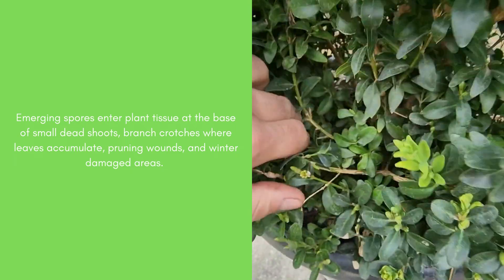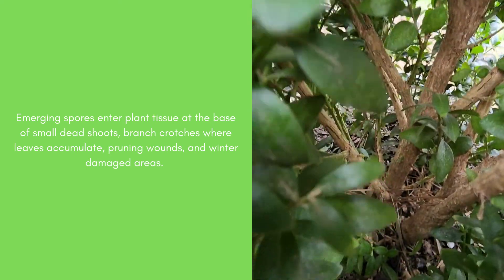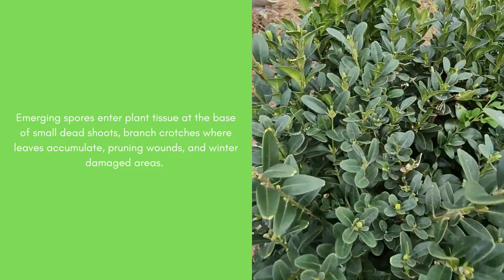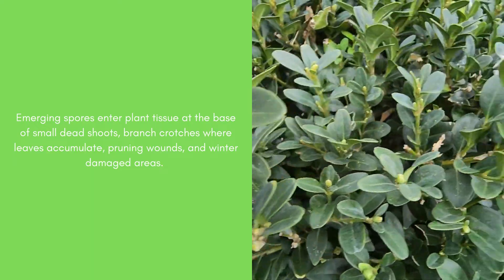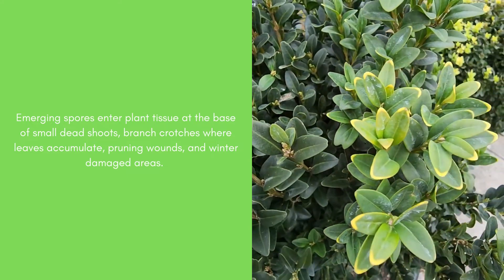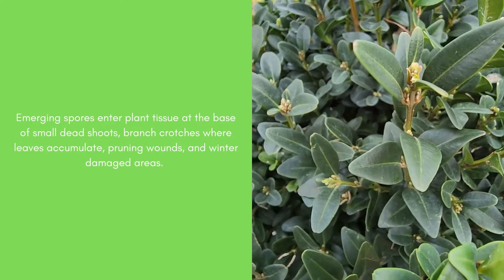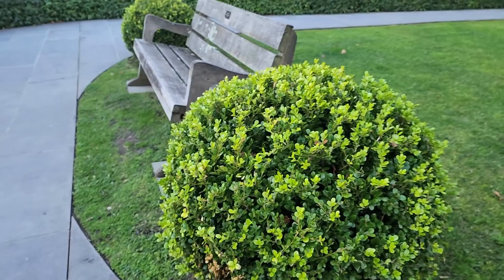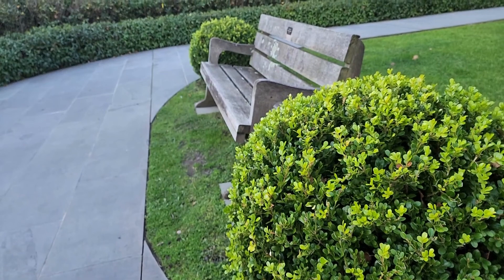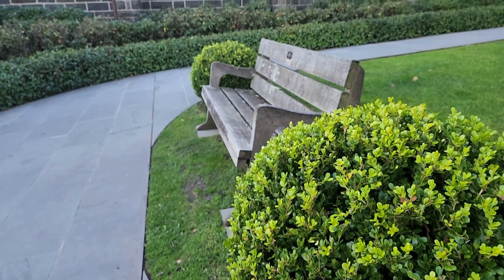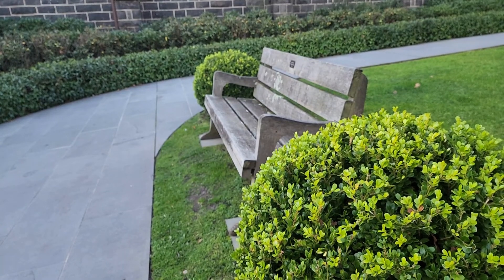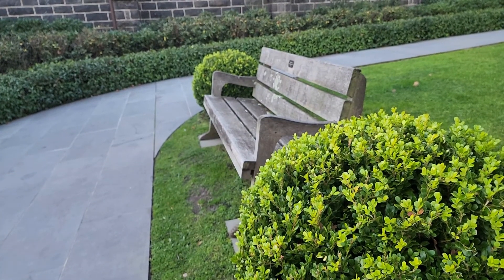Spores of Volutella have a wet, sticky texture and only travel short distances by wind and through water droplets. Volutella Blight is spread primarily by movement of infected plants, cuttings and on contaminated hands, gloves and tools. In addition, untreated water can be a major source of disease spread through spray irrigation, flood water, runoff water and wind-driven rain. This disease is often spread through the movement of nursery plants and the use of contaminated tools.